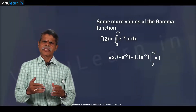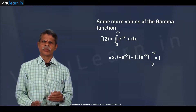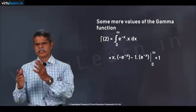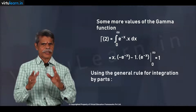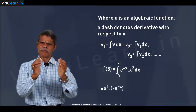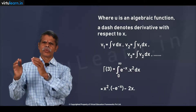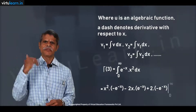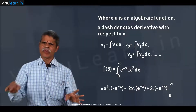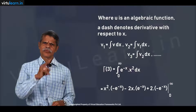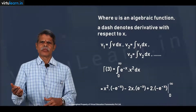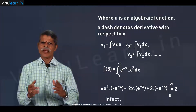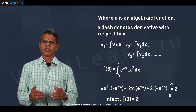For Gamma(3), we evaluate the integral from 0 to infinity of e^(−x) · x² dx, taking x² as the first function and e^(−x) as the second. Applying the general rule for integration by parts gives x²·(−e^(−x)) + 2x·e^(−x) − 2·e^(−x), evaluated at zero and infinity. At the upper limit all three quantities are zero; at the lower limit only the third term contributes, giving 2. Therefore Gamma(3) = 2 = 2!.